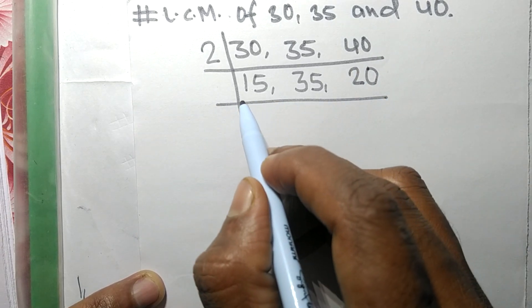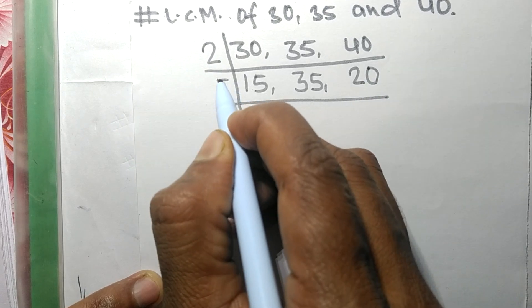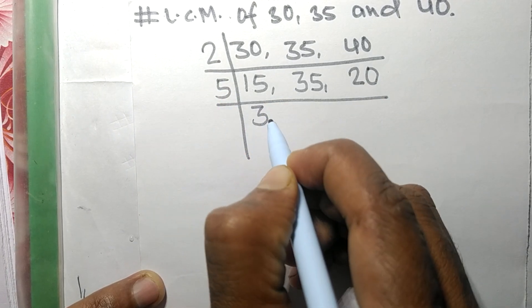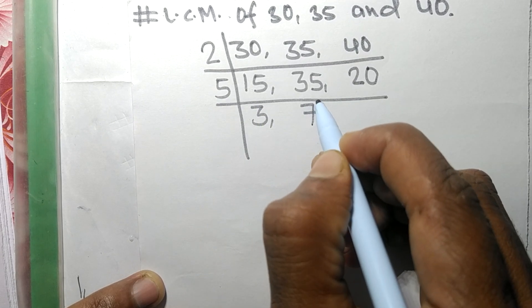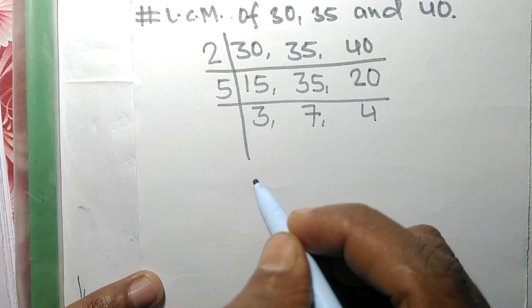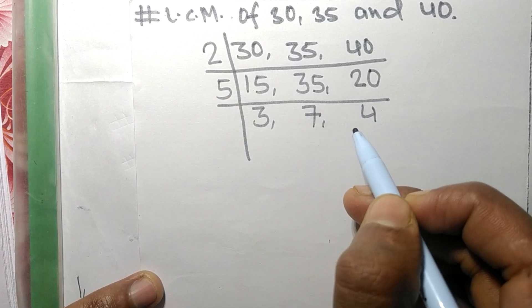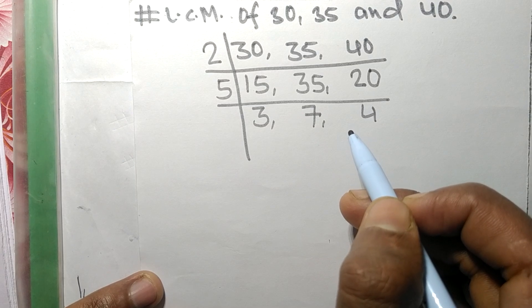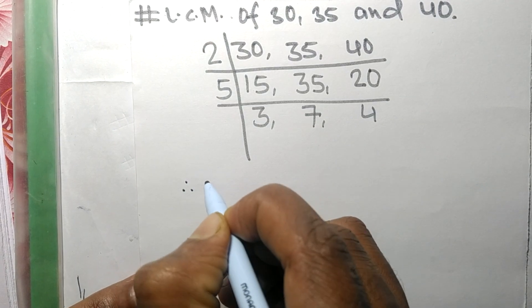Again, these all numbers are exactly divisible by 5. 5 times 3 makes 15, 5 times 7 makes 35, and 5 times 4 makes 20. Now the numbers 3, 7, and 4 are not exactly divisible by the same number, therefore